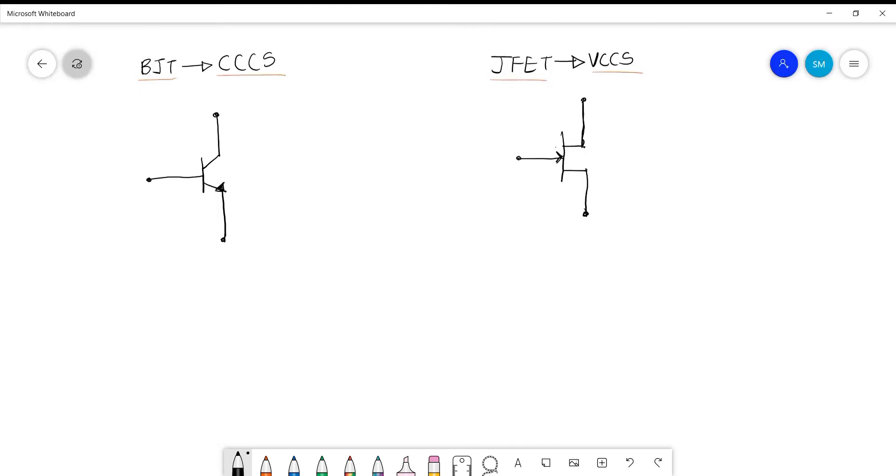Hello everyone, in this particular video we will try to understand why BJT is known as CCS and why JFET is known as VCCS. The full form of CCS is current controlled current source, and the full form of VCCS is voltage controlled current source.